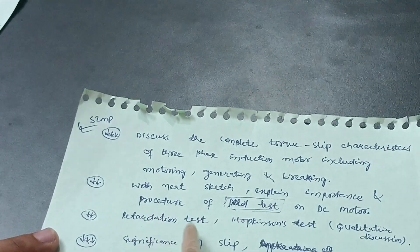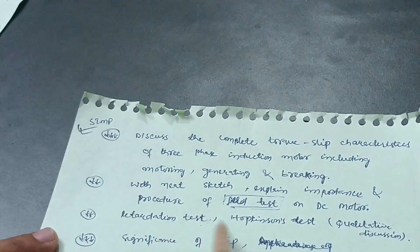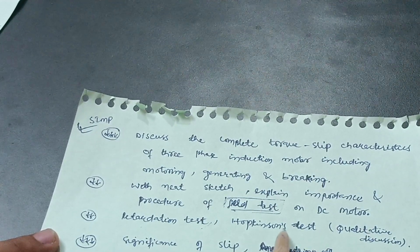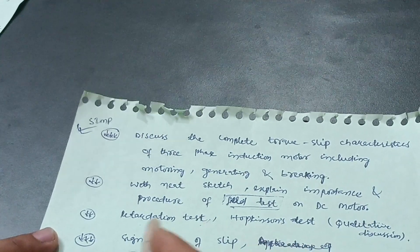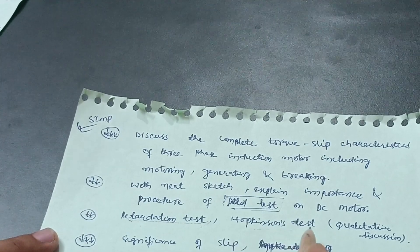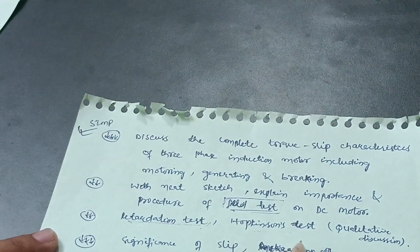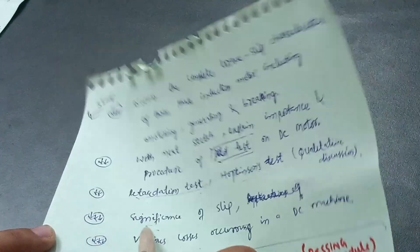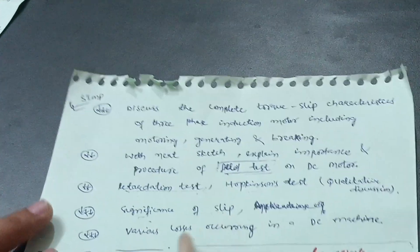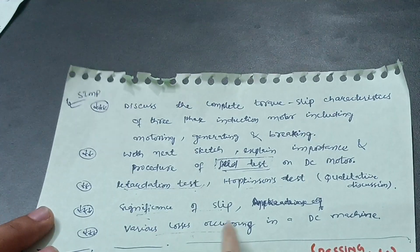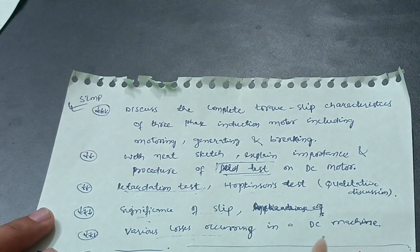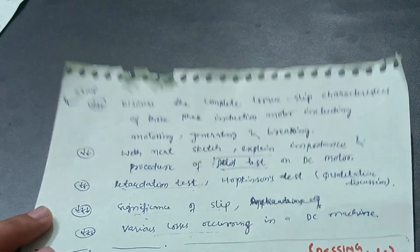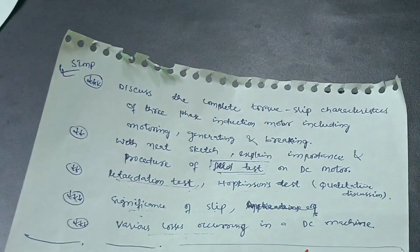Retardation test and Hopkinson's test are also in the syllabus and will be asked in the examination, though they are not the top priority questions. Also cover the significance of slip and various losses occurring in a DC machine. These topics complete the content needed to both pass and score well in this Electrical Motor subject.